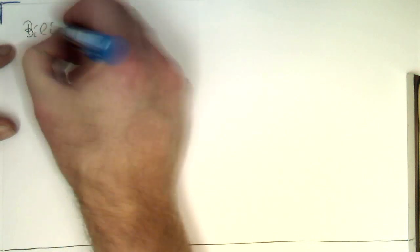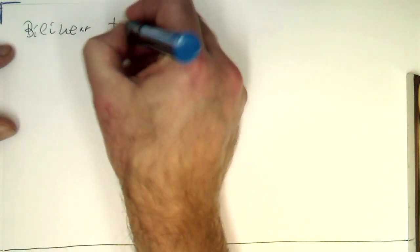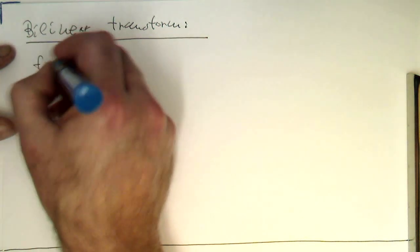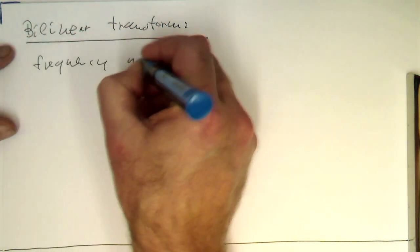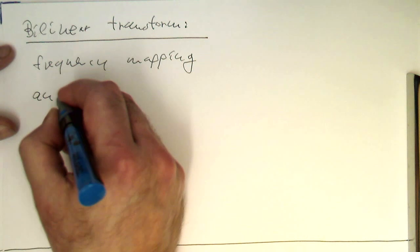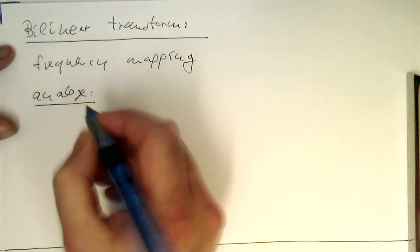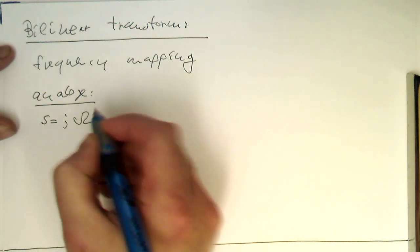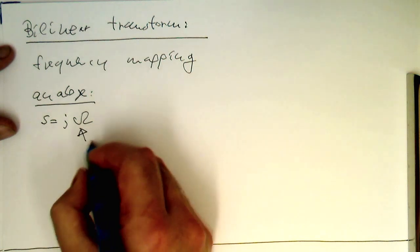Does the bilinear transform really perform this mapping of the frequencies? So bilinear transform frequency mapping. So remember, in the analog domain, frequencies are represented as s equals j capital omega. So these are our analog frequencies.